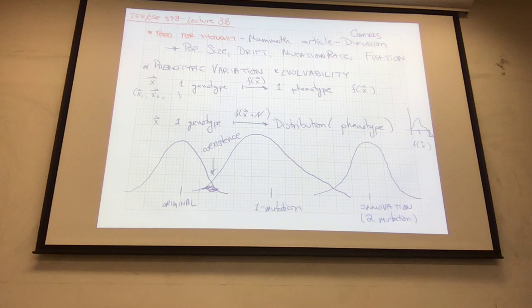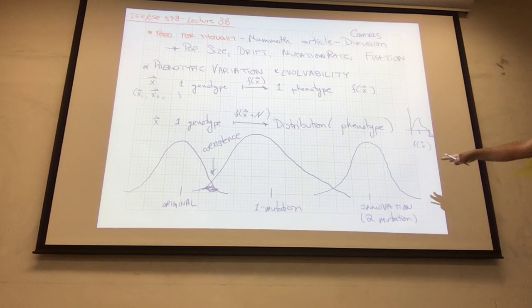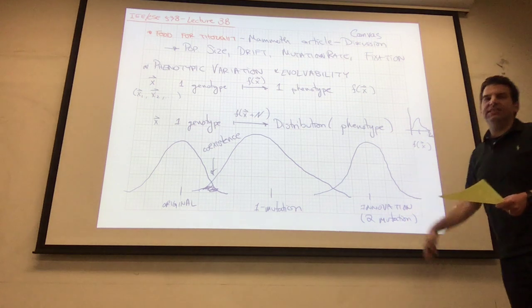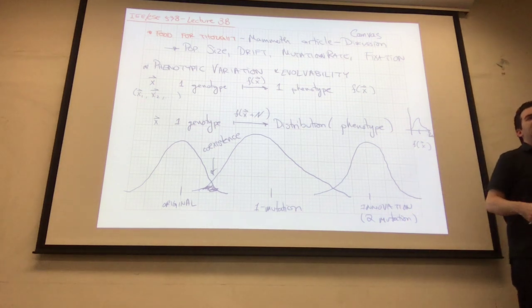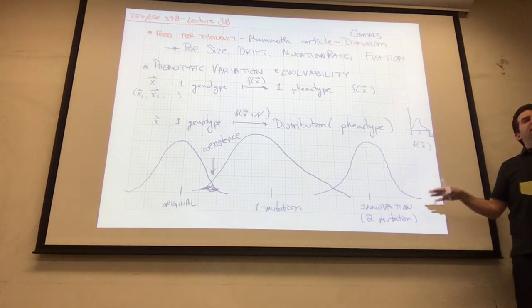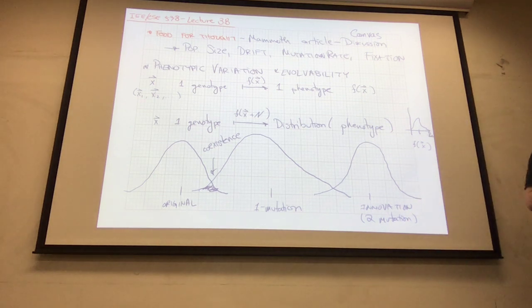Hopefully let that marinate as we go through multi-objectives. Any questions about these basic ideas about variation and evolvability?